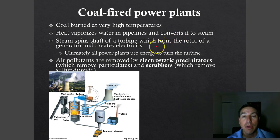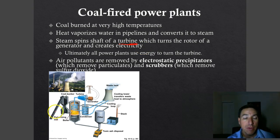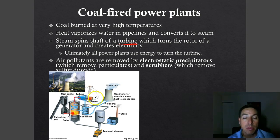How do coal-fired power plants work? Coal is burned at very high temperatures inside a boiler. The heat vaporizes water in the pipeline and converts it into steam. The steam spins a turbine, and the turbine turns the generator, which creates electricity. The coal goes into a coal bunker, then is pulverized to a fine powder. That powder is blown into the boiler, which heats a water-filled pipe. The water turns to steam, which turns the turbine, which turns the generator and produces electricity.